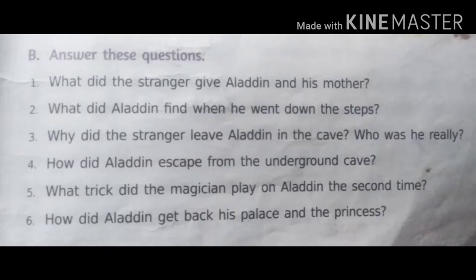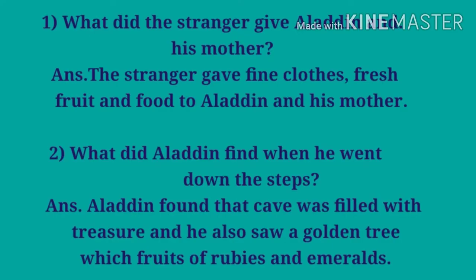Now the next exercise is answer these questions. The first question is what did the stranger give Aladdin and his mother? The answer is the stranger gave fine clothes, fresh fruit and food to Aladdin and his mother.